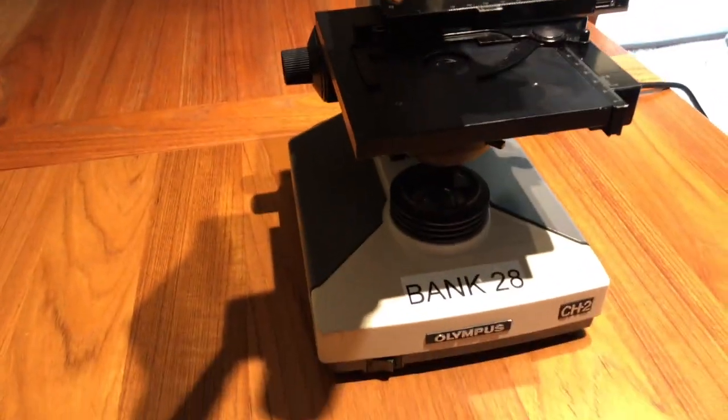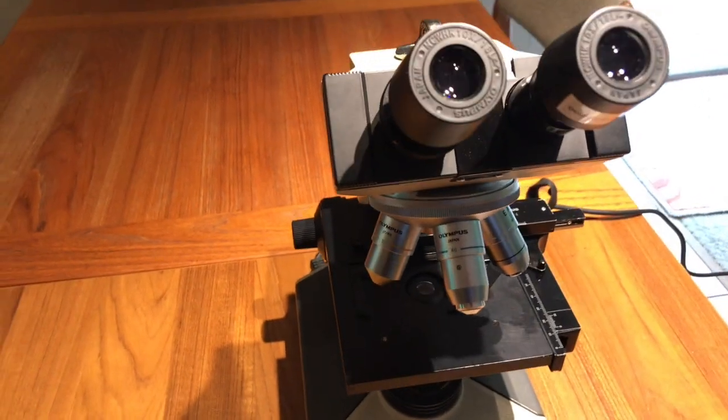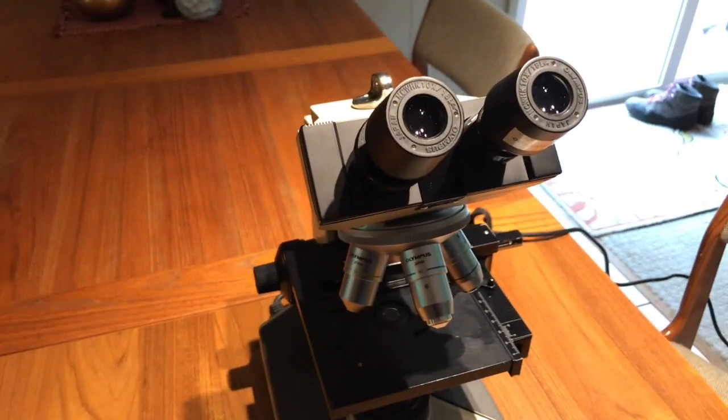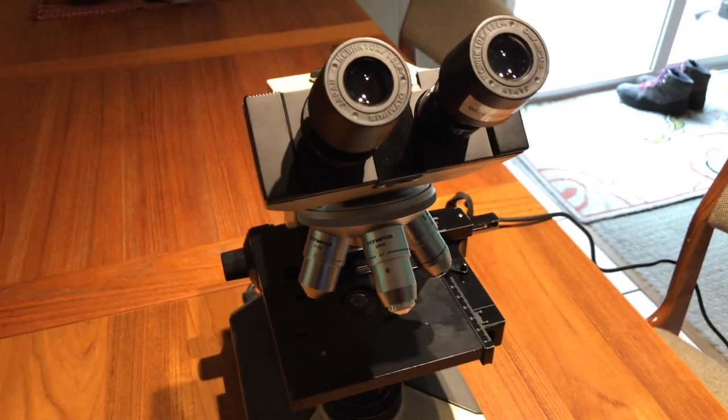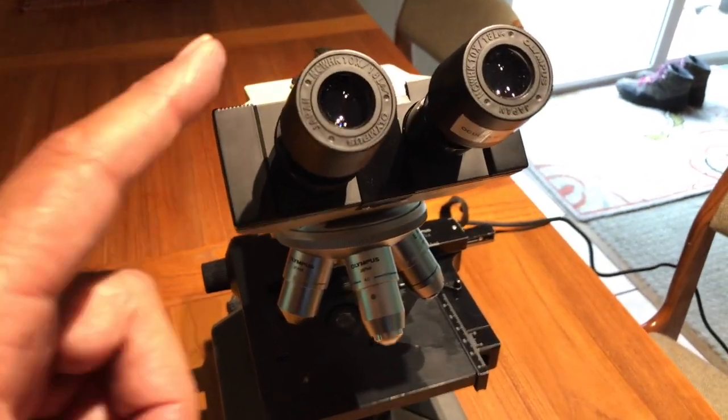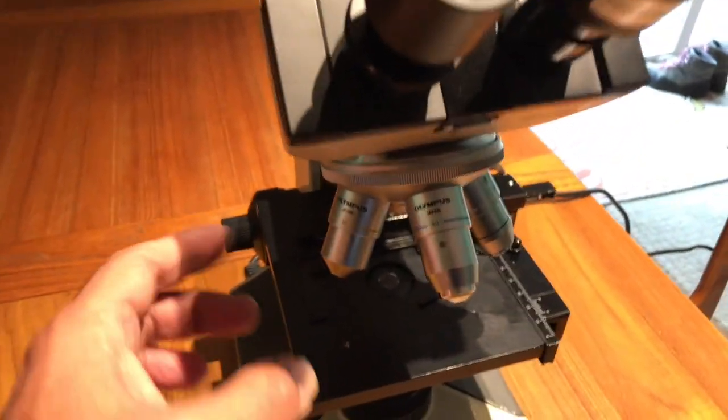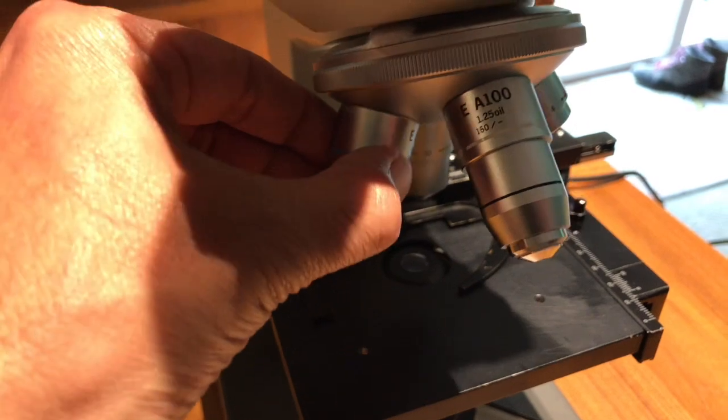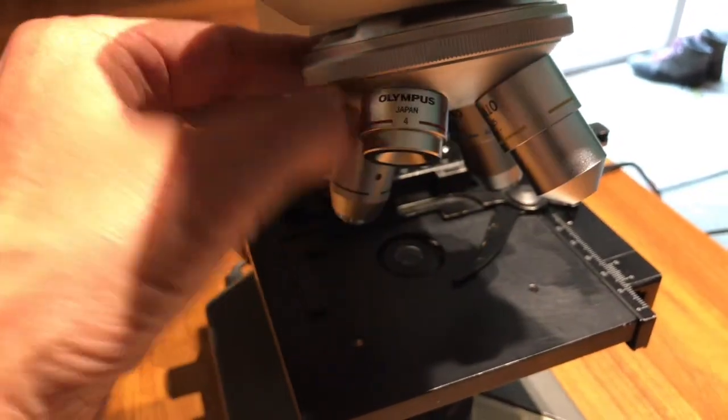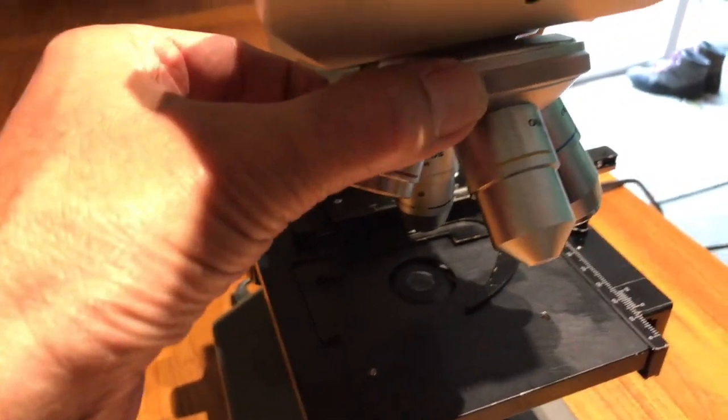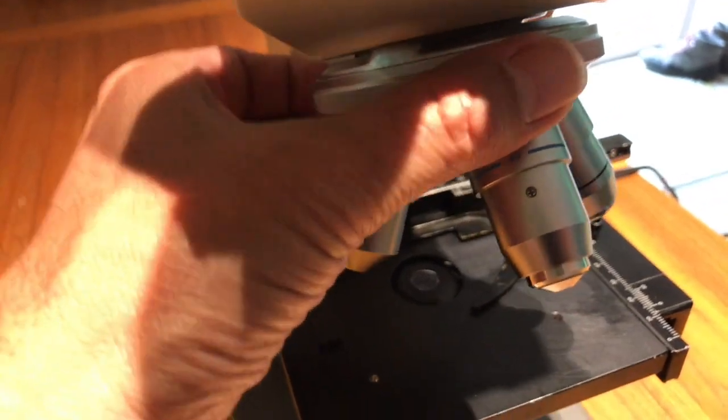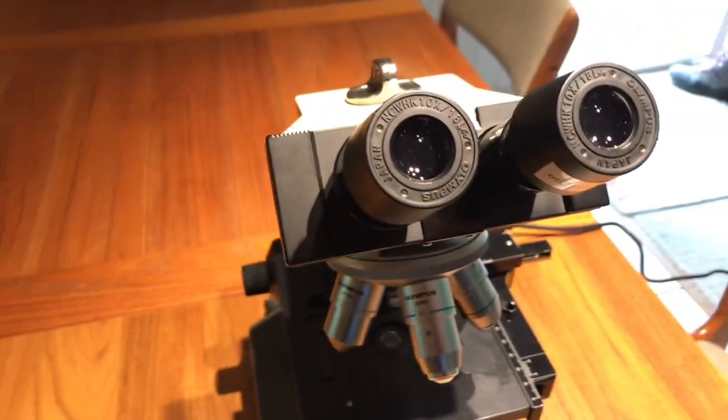We call these compound scopes, and they're called compound because they have two sets of lenses: the eyepieces which are on the top, and we have two of them, and then a series of objectives with different magnifications. We have four total on this one.